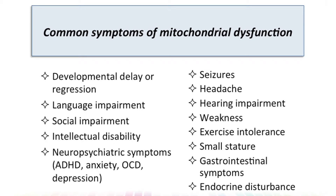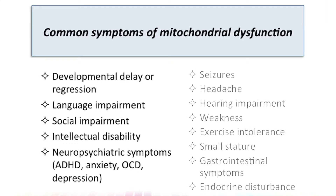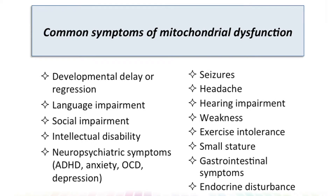There are many others, but to give you a sense: most of these involve brain function. For example, developmental delay or regression, language impairment, social impairment, intellectual disability, a whole range of neuropsychiatric symptoms including ADHD, anxiety, obsessive-compulsive symptoms, and depression, as well as seizures, headache, hearing impairment, weakness, exercise intolerance, small stature, gastrointestinal symptoms, endocrine disturbance, and many, many others.